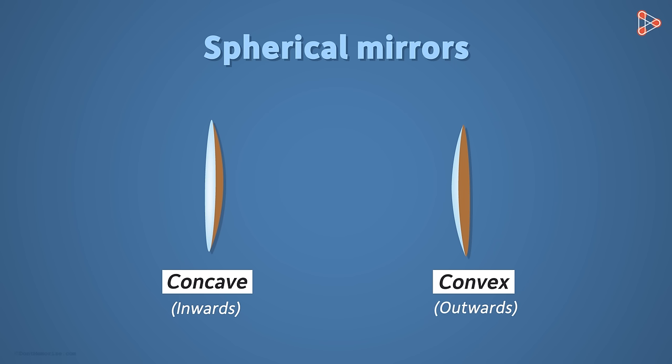The center of the reflecting surface of the mirror is called the pole. We represent it with a point P. In the front view of both the mirrors, you can see that the pole is present right at the center.